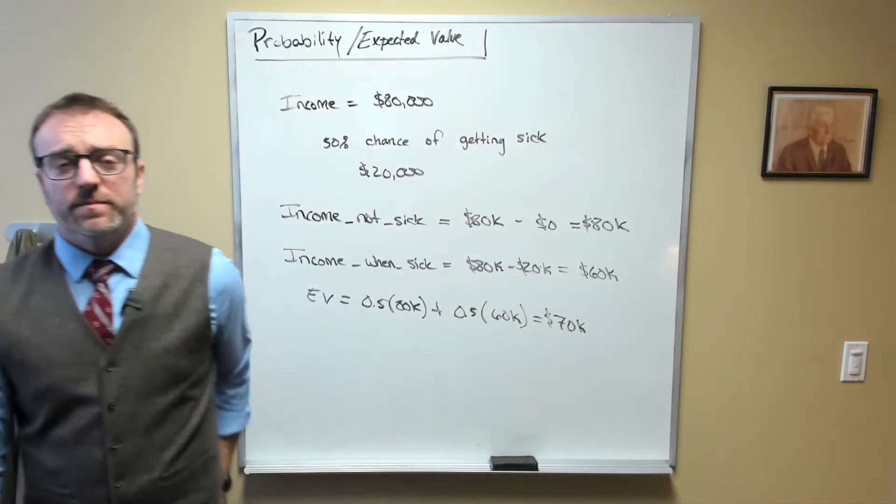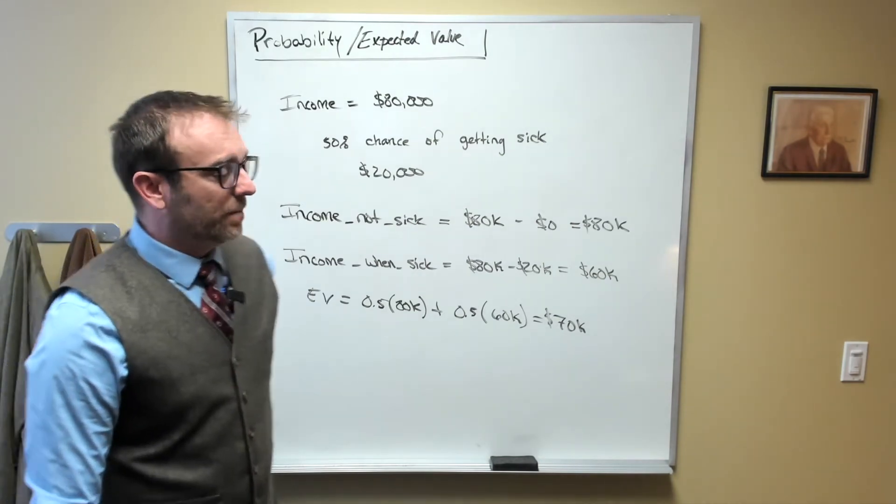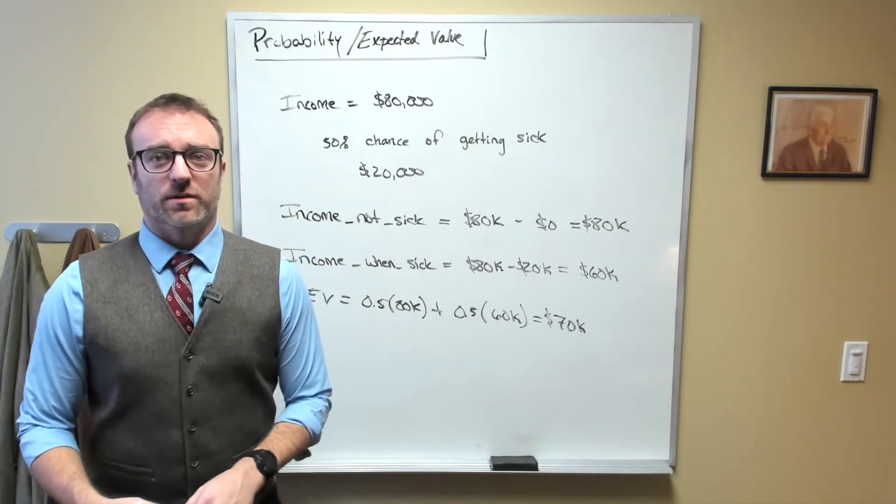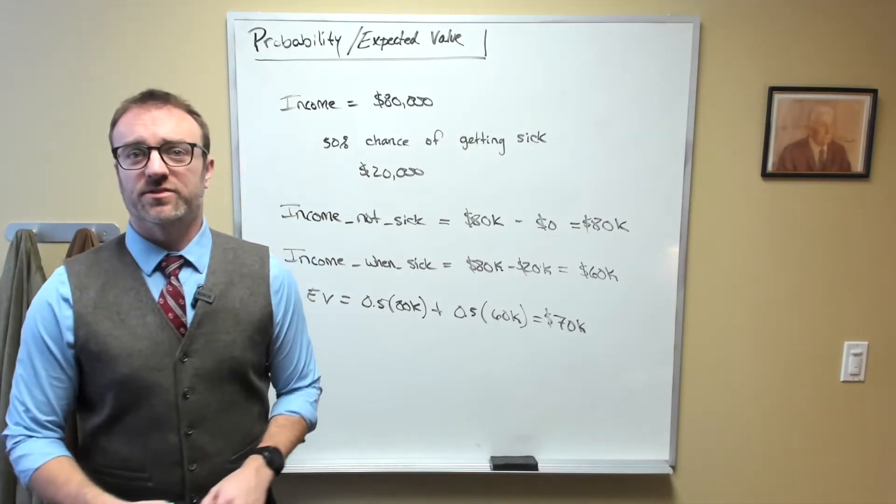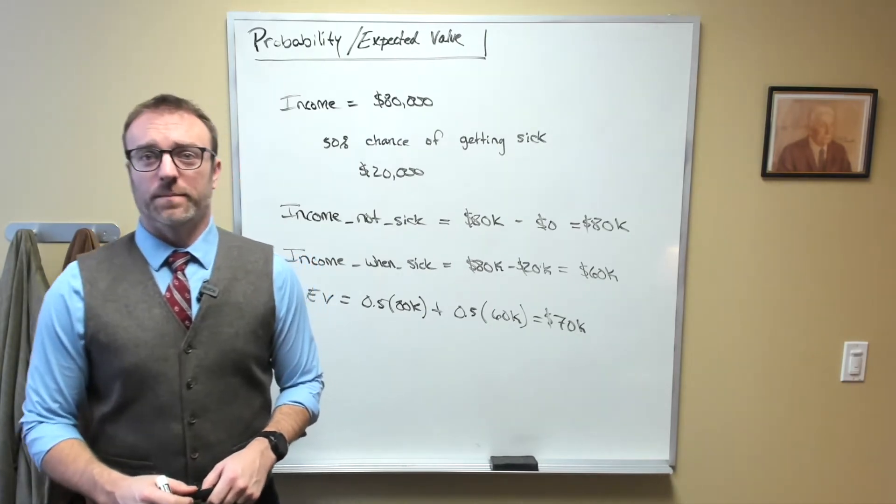All right, now it's important to note that while you will on average make $70,000 per year, some years you'll actually have $80,000 and others you'll actually only have $60,000. Most people don't like this high of a degree of variability in their income.